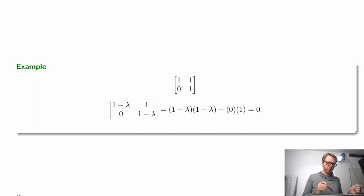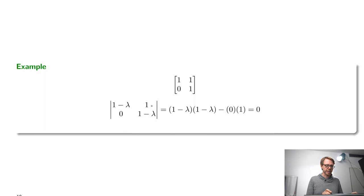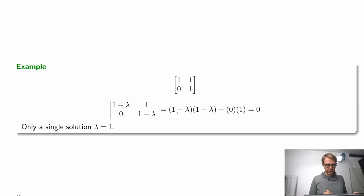Let's look at a second example with matrix (1, 1; 0, 1). Subtracting lambda times the identity gives (1 minus lambda, 1; 0, 1 minus lambda). The determinant equals the product of the diagonals, (1 minus lambda) squared, minus the product of the off-diagonals, 0 times 1. Setting this to zero, we see that we only get a single solution: lambda equals 1.